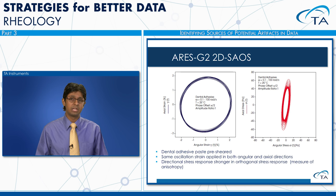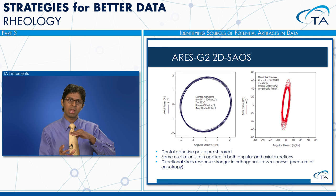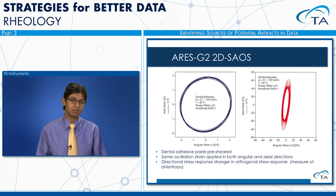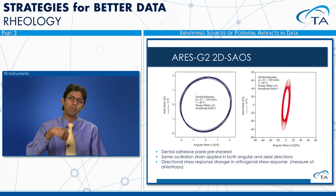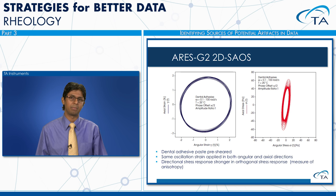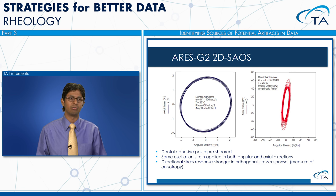2D SAOS applies small amplitude oscillatory strain in two dimensions simultaneously — the motor on the bottom and the FRT on the top both oscillating — to characterize anisotropic effects in complex fluids. A dental adhesive example shows that while the applied axial and angular strains are isotropic, the stress signal is prominently oriented along the axial direction, indicating underlying anisotropic structure with implications for processing and flow behavior.